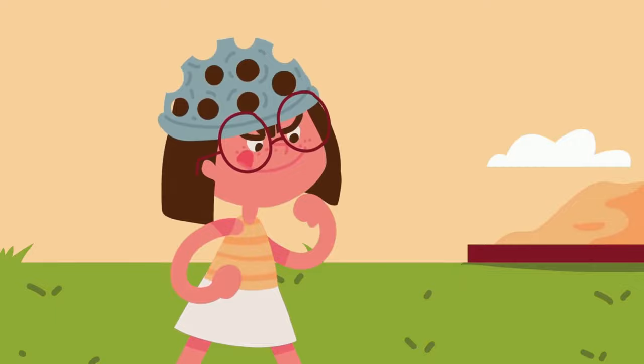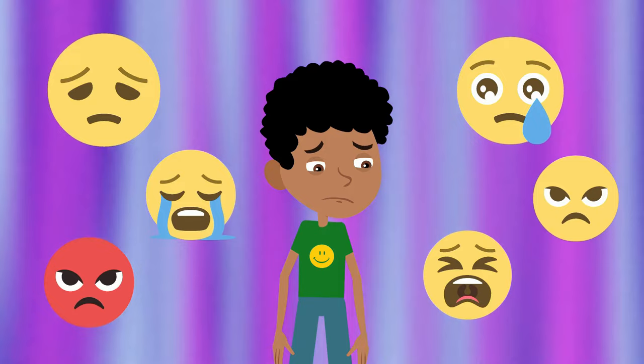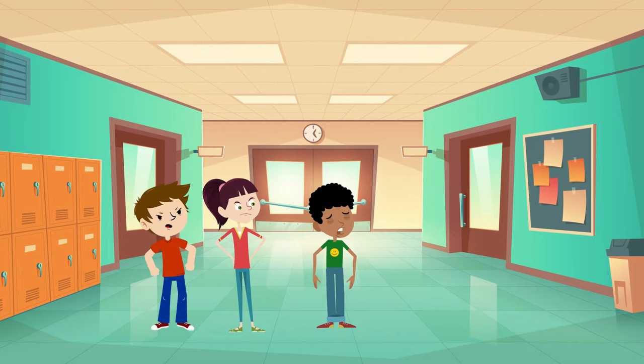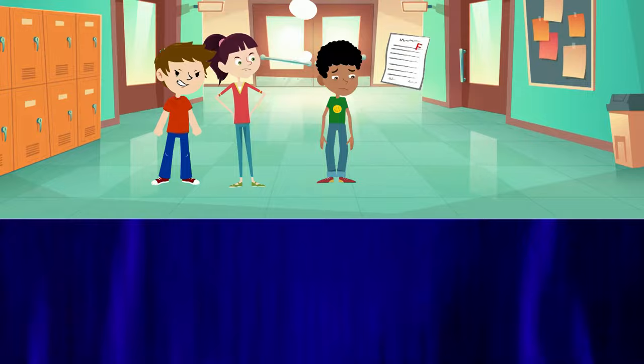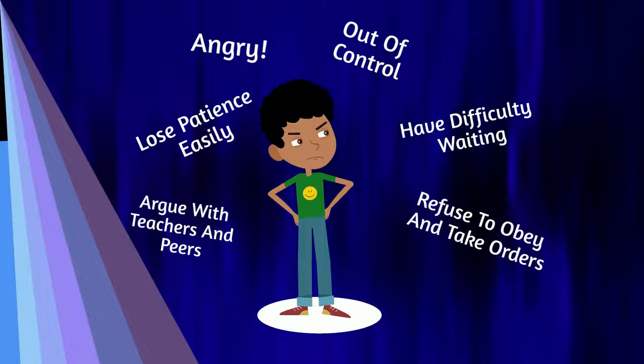Children with ODD feel remorseful, in addition to reacting very emotionally. They can cry, get angry, throw tantrums, and rage when annoyed. With the frequency of these behaviors, the child's interpersonal relationships at school, school performance, and family life are negatively impacted. These children lose patience easily, have difficulty waiting, argue with teachers and peers, refuse to obey and take orders, and can be out of control and angry when things don't go their way. They don't accept school rules, and simple activities may upset them.